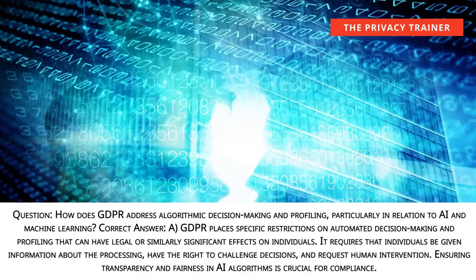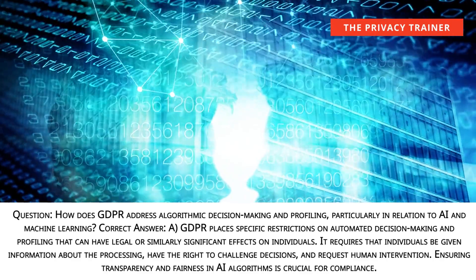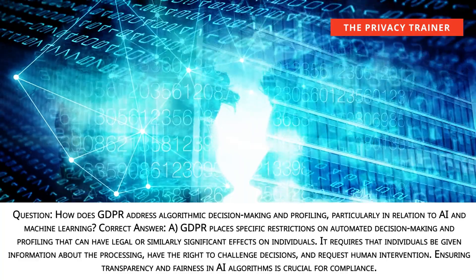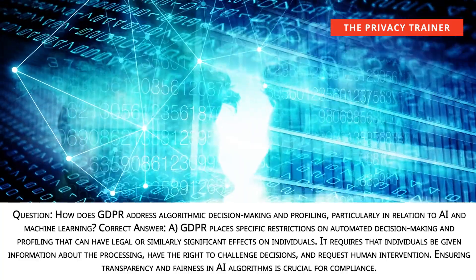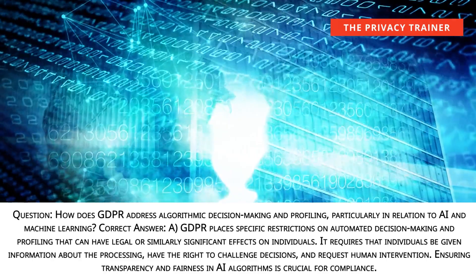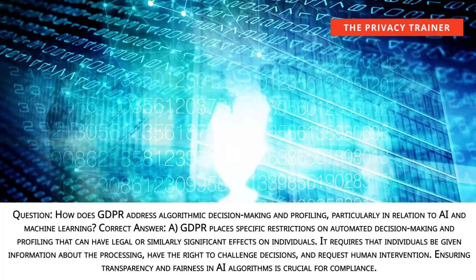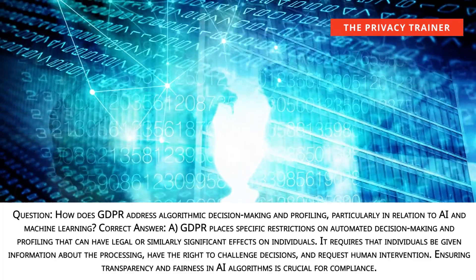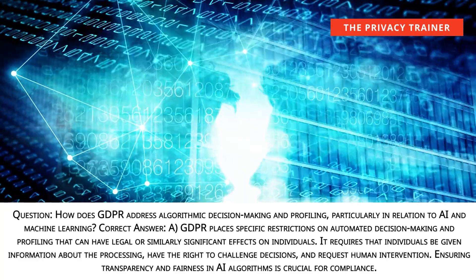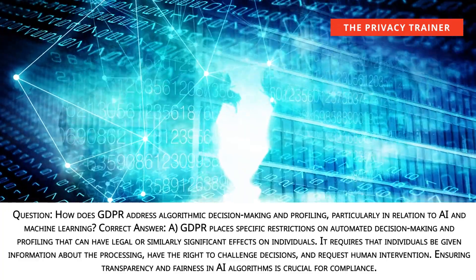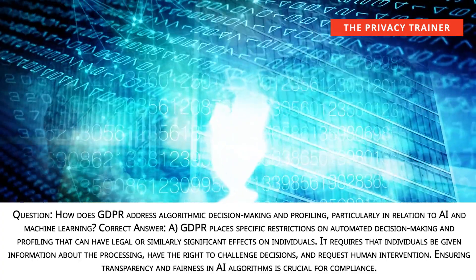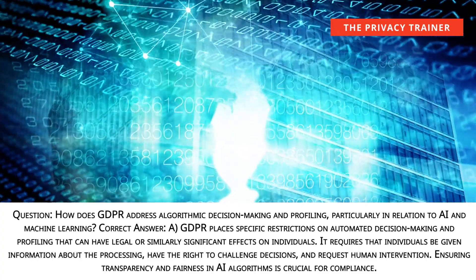Question: How does GDPR address algorithmic decision-making and profiling, particularly in relation to AI and machine learning? Answer A: GDPR places specific restrictions on automated decision-making and profiling that can have legal or similarly significant effects on individuals. It requires that individuals be given information about the processing, have the right to challenge decisions, and request human intervention. Ensuring transparency and fairness in AI algorithms is crucial for compliance.